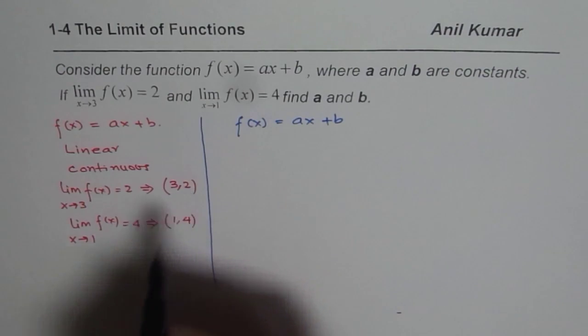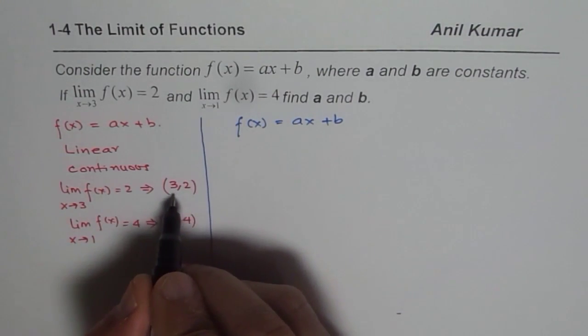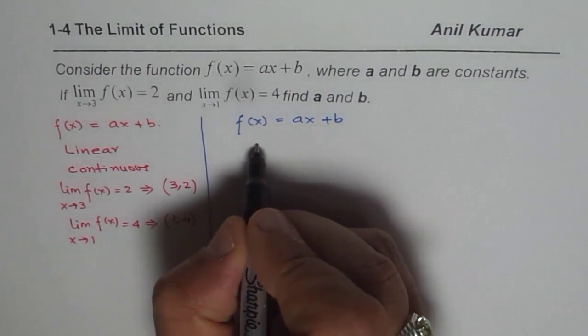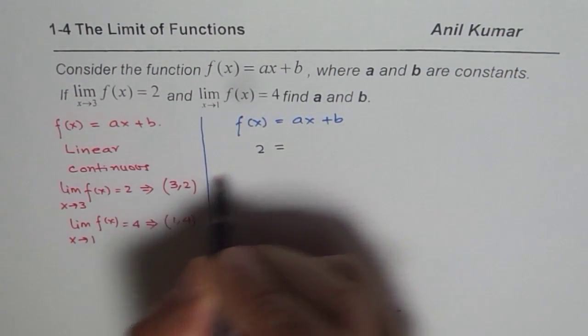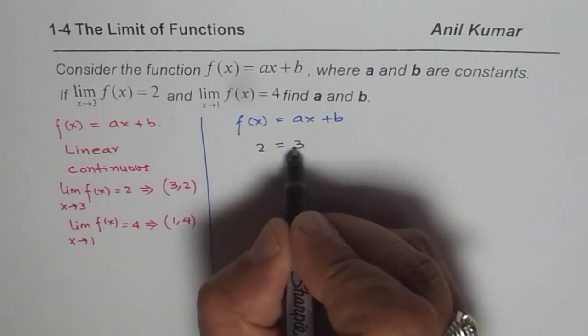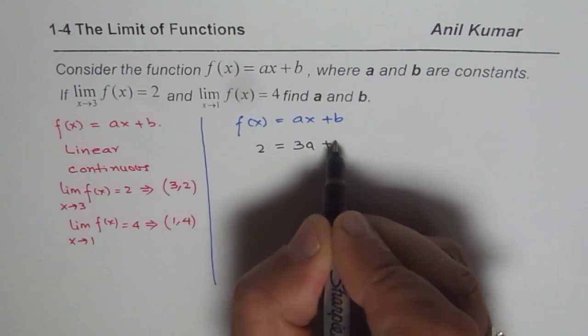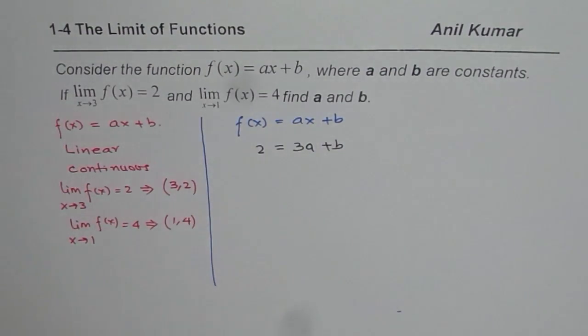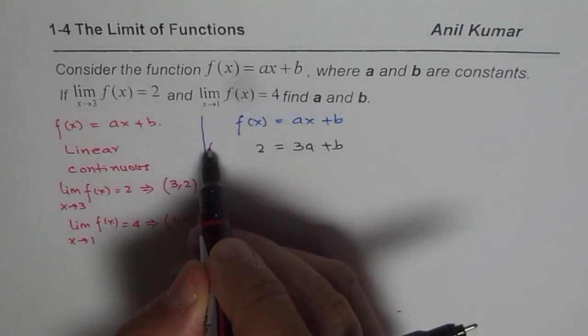Substituting 3 and 2. So if I use 3 and 2, 3 is the value of x, 2 is y. So we get 2 equals 3a, so I am writing 3 for x plus b. So in this case, I have substituted the value 3 and 2.